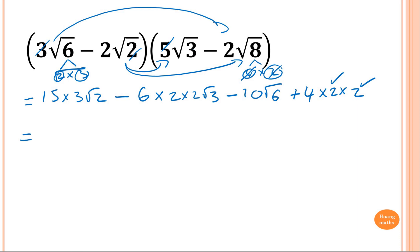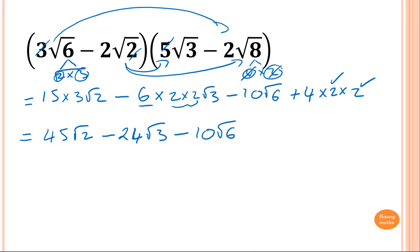Now simplifying: that gives me 45 square root of 2. And 6 times 4 is 24, so 24 square root of 3. Minus 10 square root of 6. And 4 times 4 is 16. So the answer is 45 square root of 2, minus 24 root 3, minus 10 square root of 6, plus 16.